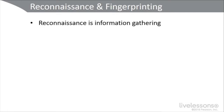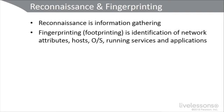Let's talk about reconnaissance and fingerprinting. Reconnaissance is the process of information gathering, and it's usually done early on in the life cycle of an advanced persistent threat. Fingerprinting, or footprinting, is identifying network attributes, hosts, operating systems, running services and applications. In footprinting, the attacker may utilize WHOIS, NS Lookup, or other advanced lookup tools for DNS. It can use traceroute, enumerators, echo request, echo reply.